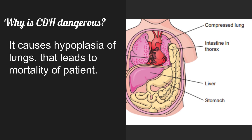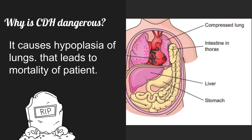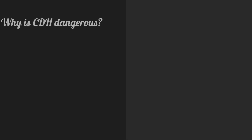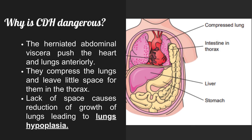CDH is dangerous because it causes hypoplasia of the lungs, leading to mortality of the patient. The herniated abdominal viscera push the heart and lungs anteriorly, compressing the lungs and leaving little space for them to grow in the thorax. This lack of space causes reduction of lung growth, leading to pulmonary hypoplasia.